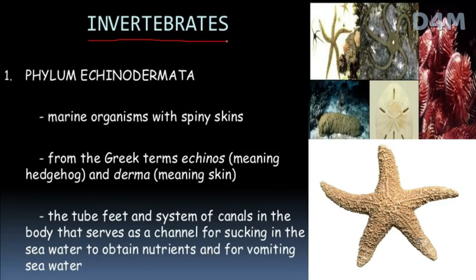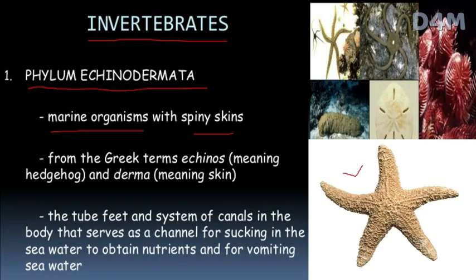Invertebrates are animals without a backbone. There are a few phyla. The first phylum is Echinodermata. These are marine organisms with spiny skins. They have tube feet and canals in the body through which sea water flows, carrying nutrients. An example is the sea star.